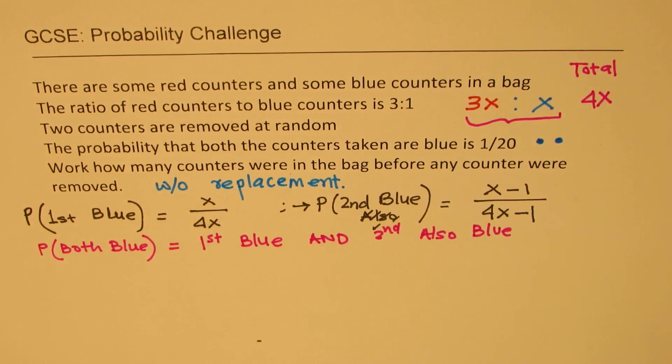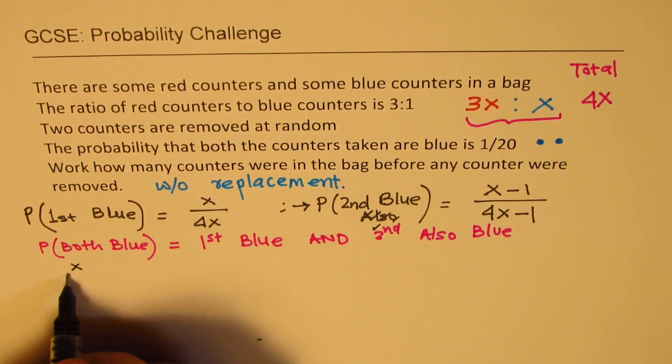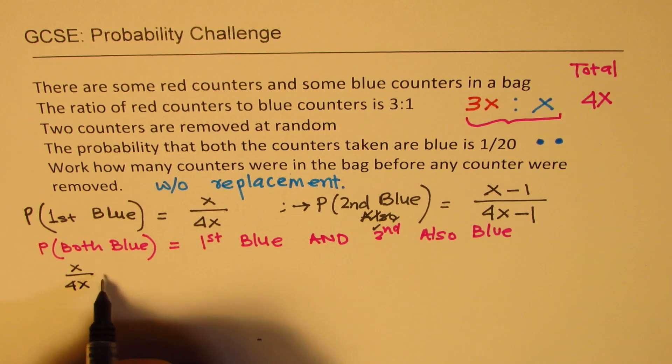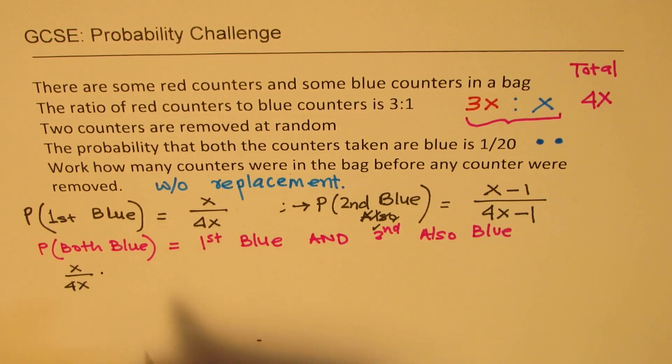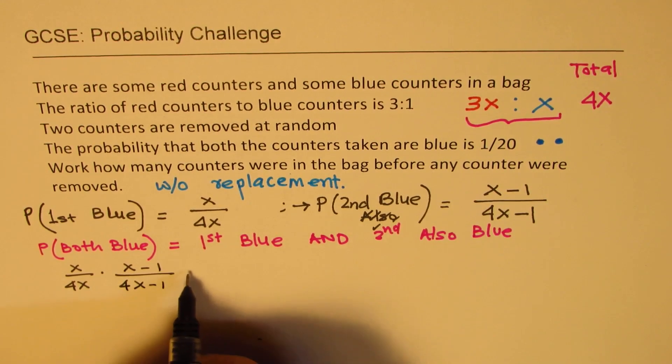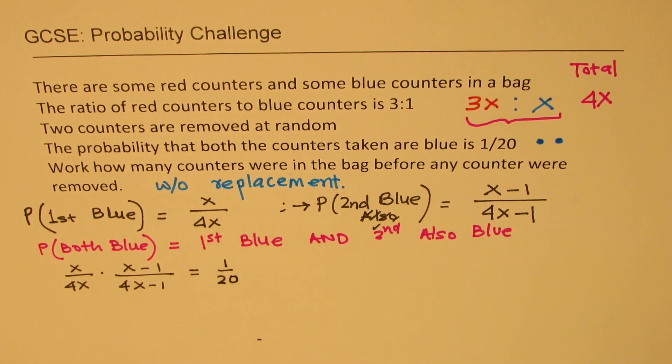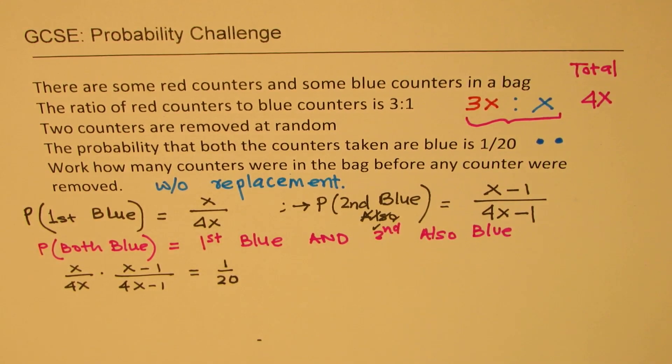That is kind of important to understand. So whenever you get and into picture, they get multiplied. So what we get here is x over 4x and means you multiply them. And the second one is x minus 1 over 4x minus 1. And it is given to you that this probability is 1 over 20. So once you get the equation, it is not very difficult to solve.